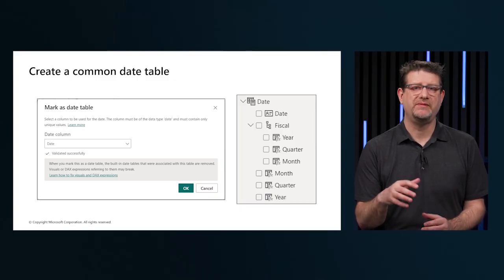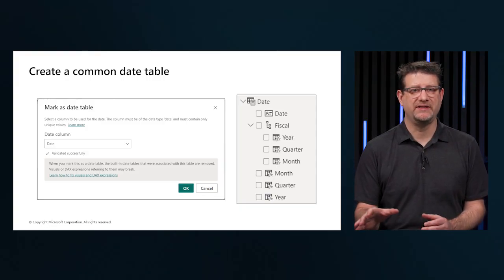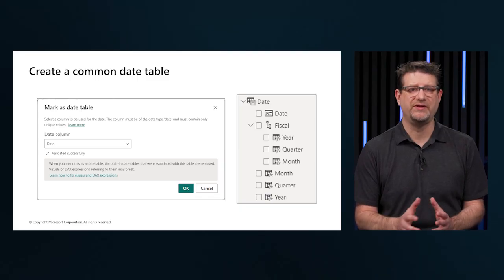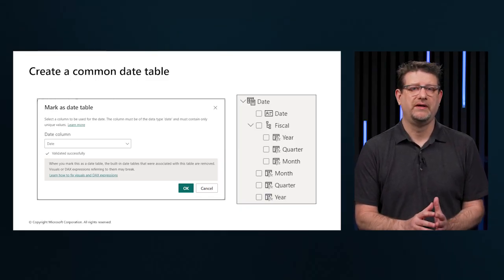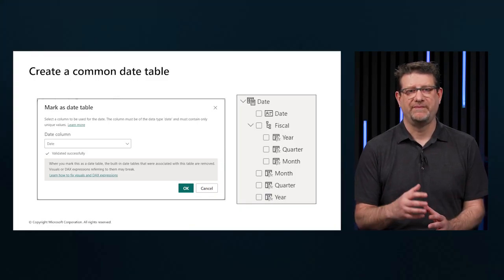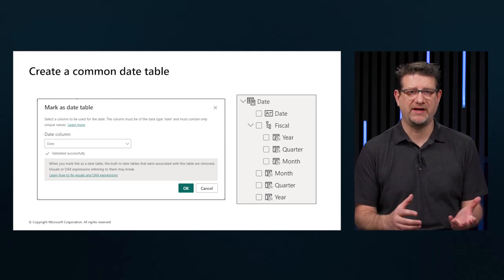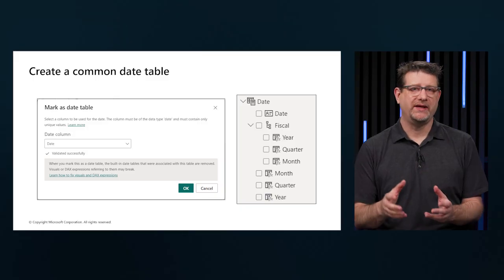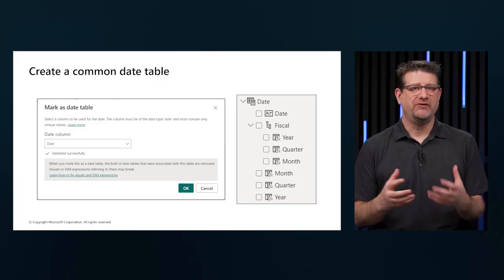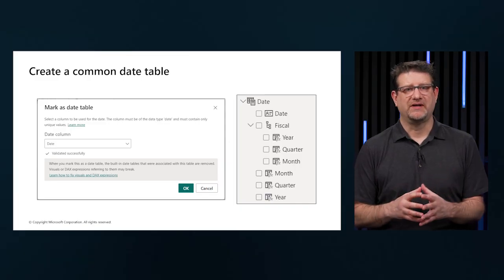This is where a common date table comes into play. Before creating a new one, it's advisable to check if there's already an existing date table within the organization to avoid duplicating work. A common date table allows us to standardize date formats and ranges according to company requirements. It can include additional details like company holidays, fiscal versus calendar dates, and more. By adding month, week, and day number columns, we can filter and aggregate data based on various date types, simplifying complex calculations.